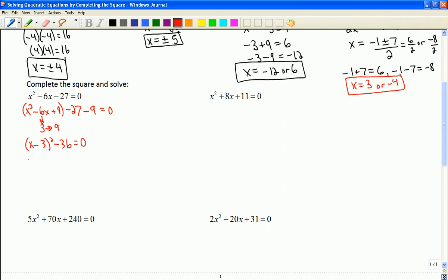So I'm going to have x minus 3 all squared minus 36 equals 0. So that means I'm going to get x minus 3 squared is 36. I'll take the square root of both sides. I'll have x minus 3 is equal to plus or minus root 36.